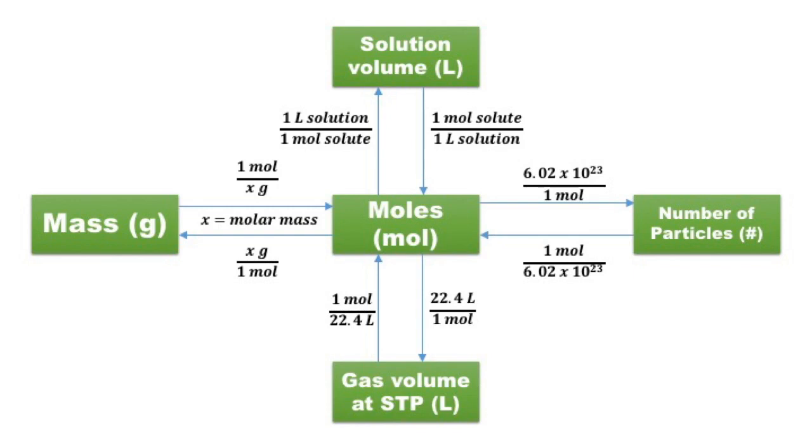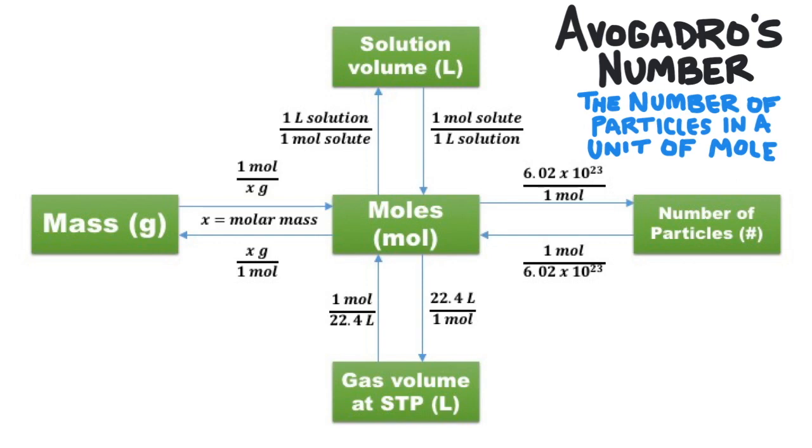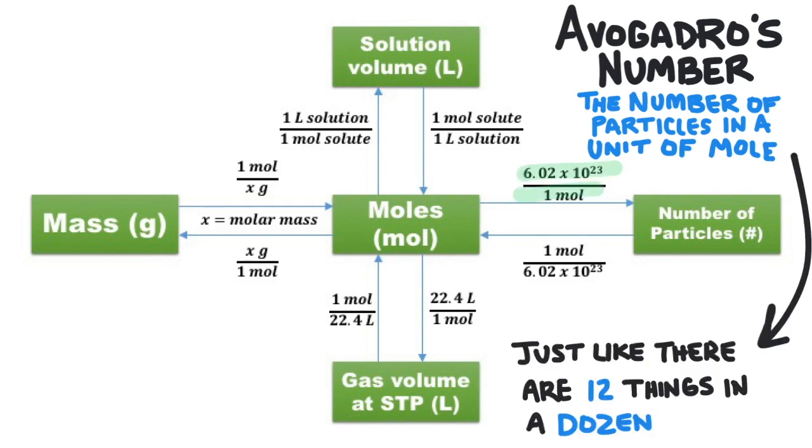To convert between the number of particles and moles, we need to use Avogadro's number. Avogadro's number is the number of particles in the unit of mole. Just like there are 12 things in a dozen, there are 6.02 x 10 to the 23 things in a mole.